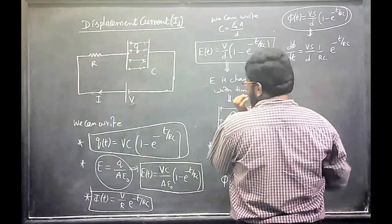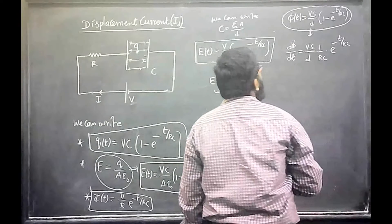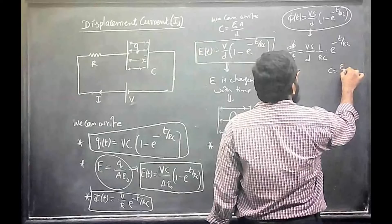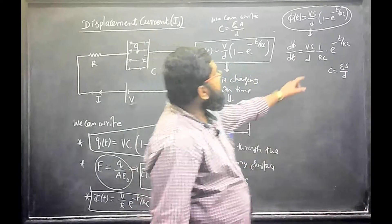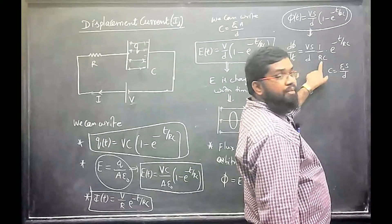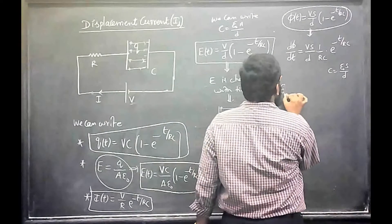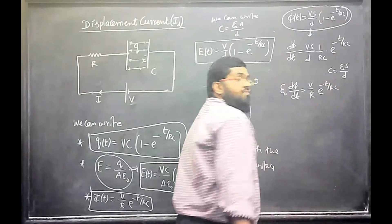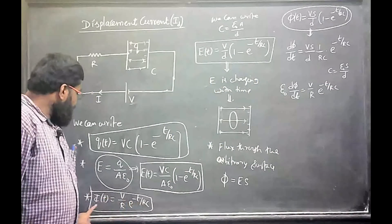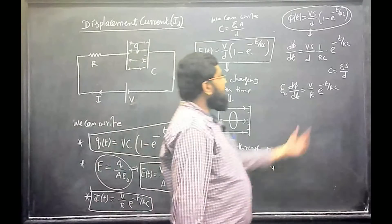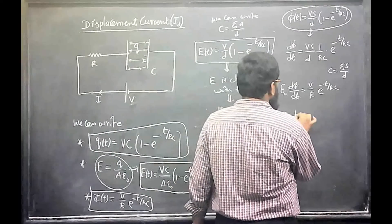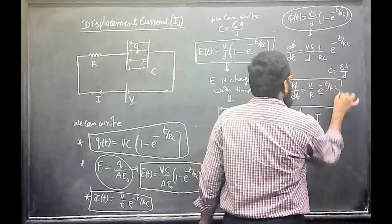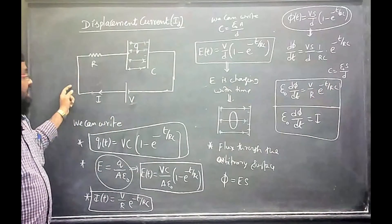Now substitute C = epsilon_naught * A / d into the expression. The area and d terms cancel, leaving epsilon_naught. So epsilon_naught * d(phi)/dt = (V/R) * e^(-t/RC), which is exactly equal to the current I. Therefore epsilon_naught * d(phi)/dt equals the conduction current. Even though there is no medium between the capacitor plates, the flux passing through that region, multiplied by epsilon_naught, gives the same current.